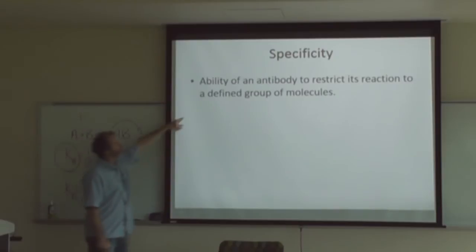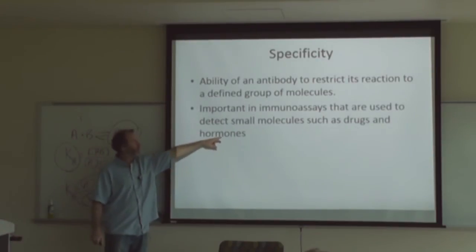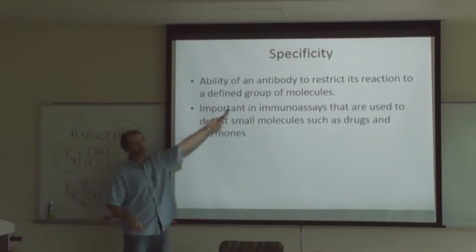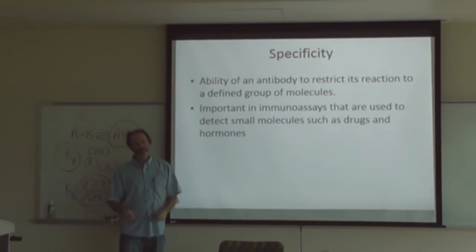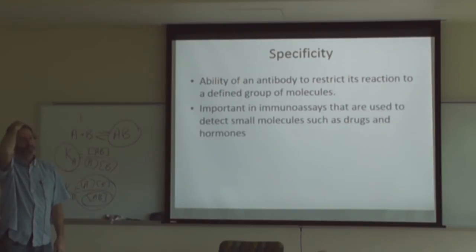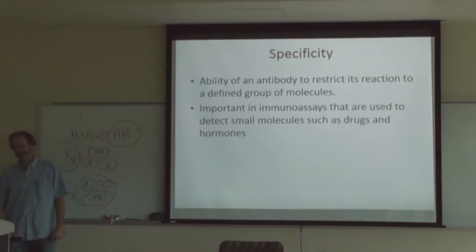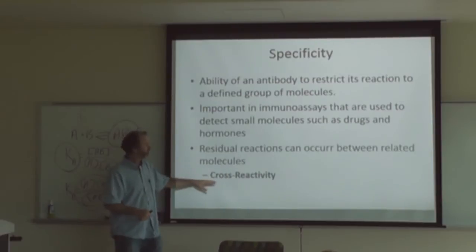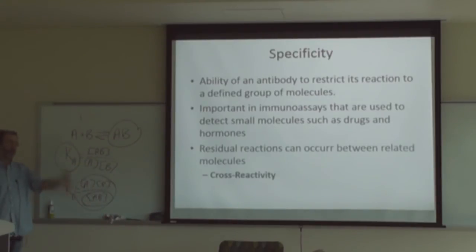Specificity is the ability of an antibody to restrict its reaction to a defined group of molecules. It's important in immunoassays used to detect small molecules such as drugs and hormones. When you don't have the specificity you need, the antibodies will cross-react with something else. For example, an immunoassay for digoxin can cross-react with caffeine. Residual reactions between related molecules are called cross-reactivity, which can give false positives or throw off quantification.